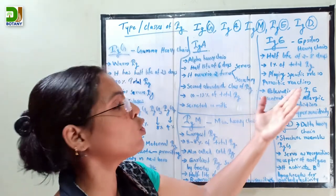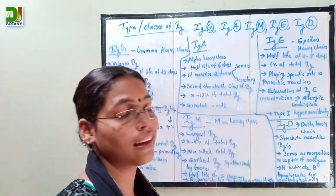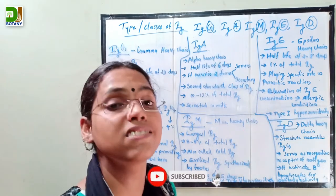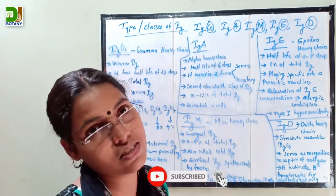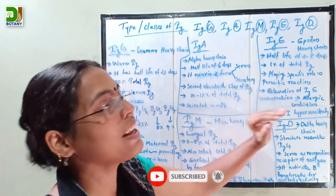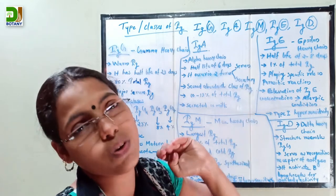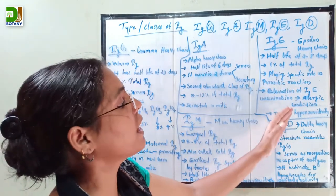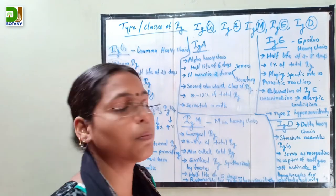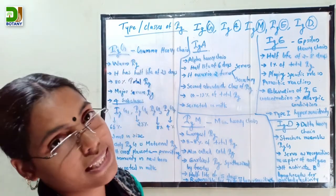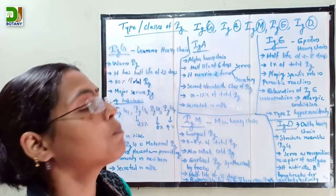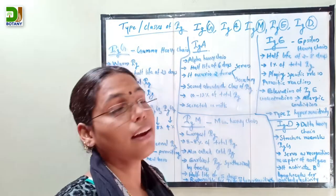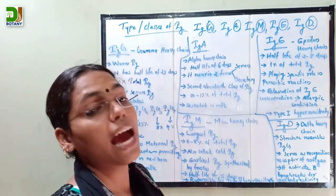A high concentration of immunoglobulin E is responsible for allergic conditions. It is present in the least concentration in blood serum and is mainly responsible for type 1 hypersensitivity.